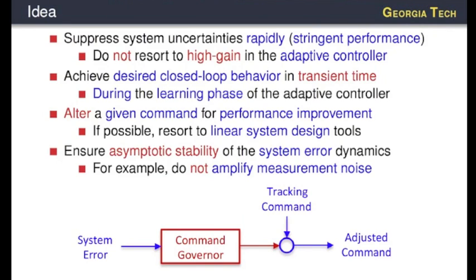We would like to suppress our system uncertainties rapidly to achieve stringent system performance. While doing that, we cannot use high gain controllers to reduce stability, so we need an additional mechanism. What I mean by shaping the transient response is achieving desired closed-loop behavior in transient time, which is basically during the learning phase of the controller. Adaptive control learns and can have different transient responses, but how do we get rid of the negative aspects of adaptive learning during the transient time?